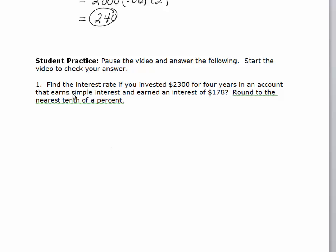Okay, so this problem, we're asked to find the interest rate if you invested $2,300 for four years in an account that earns a simple interest. And you earned an interest of $178. So again, we're going to write down the formula. Interest equals principal times rate times time. And this time, R is our unknown. We don't know the interest rate, but we know the principal, which is $2,300.